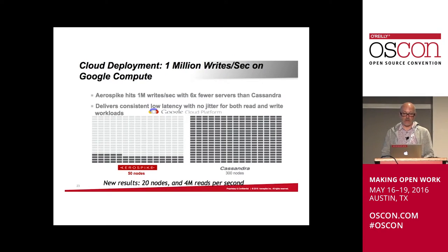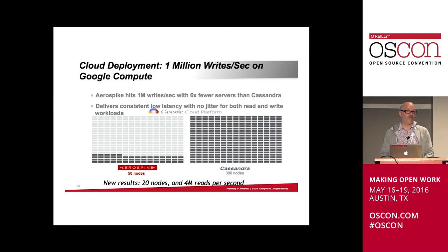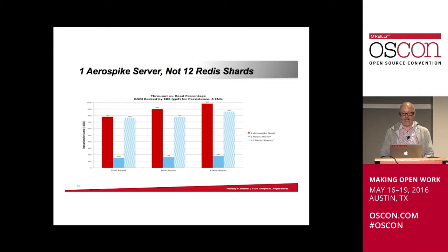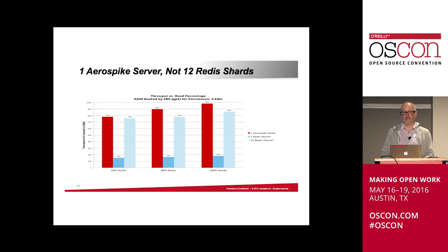Here's a benchmark Google published showing 1 million writes per second per node, on 50 nodes. That gives you the scale of performance you can get with Aerospike. You can also use Aerospike as pure in-memory without SSD storage behind it. Comparing to Redis, you can do the same workload on one Aerospike server versus 12 Redis nodes.